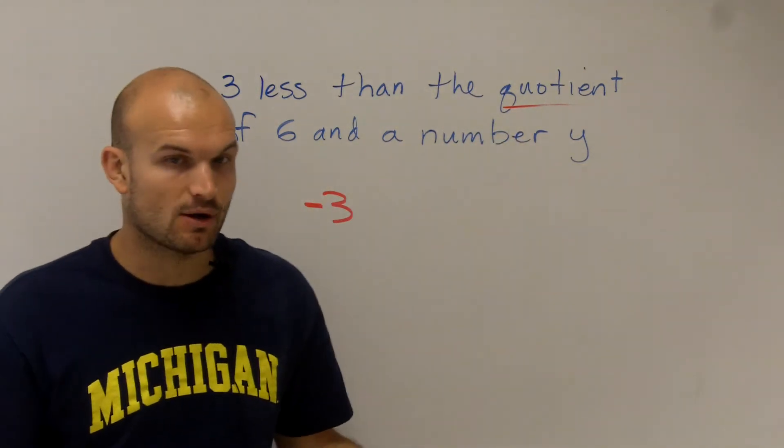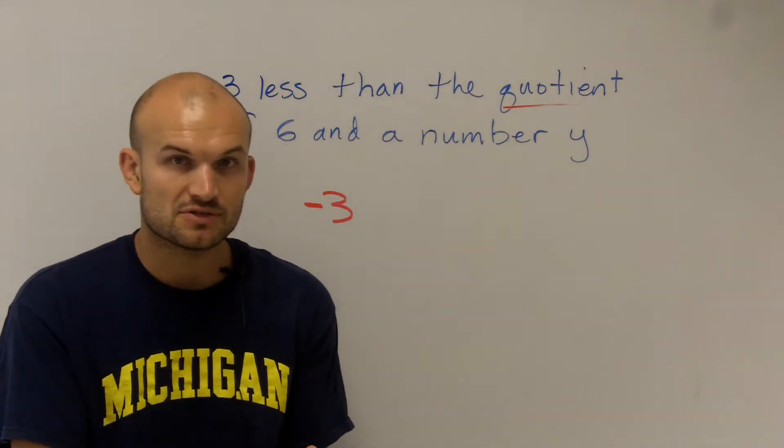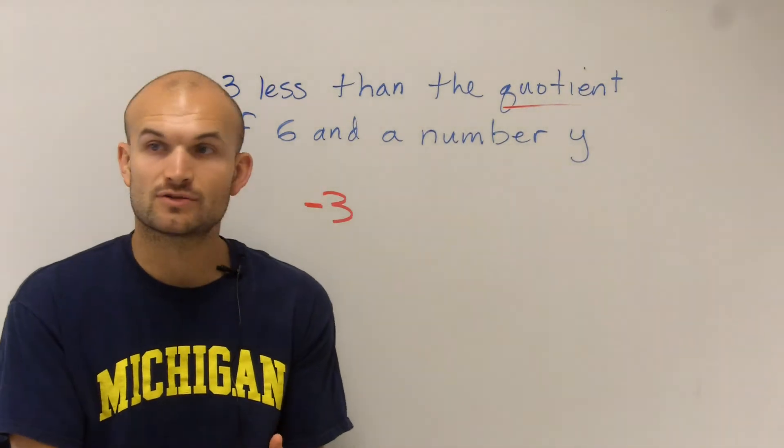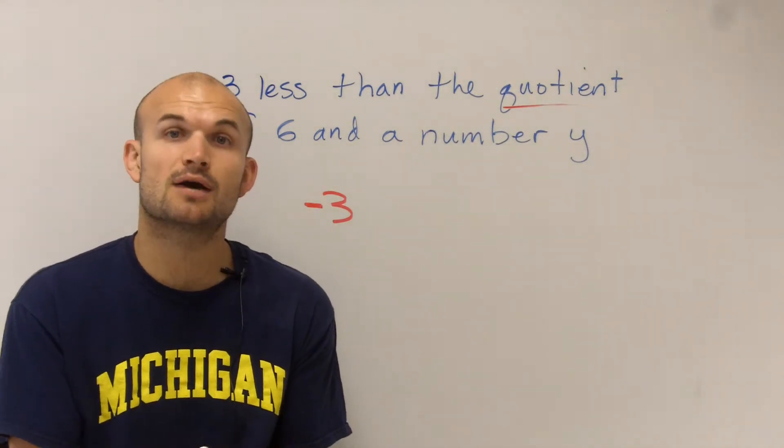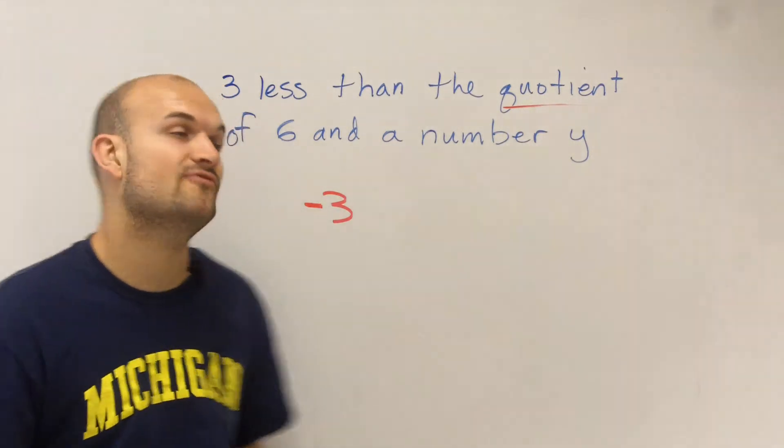Well, you need to remember, when we talked about quotient, right? Difference was for subtraction. Product was for multiplication. And sum was for addition. So quotient means division.